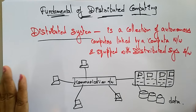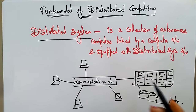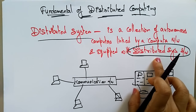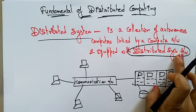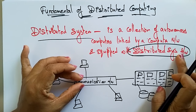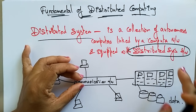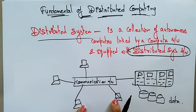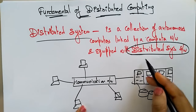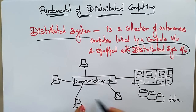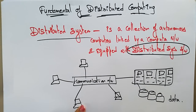Now, what exactly is the role of this distributed system software? These computers are linked by a communication network because of this software. It enables all these computers to coordinate their activities and to share the resources of the system — hardware, software, and data.